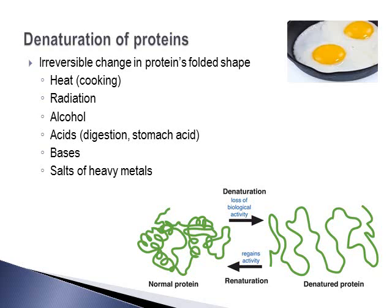This image shows a good example of what a normal protein looks like, and once it's denatured, it usually loses biological activity — the structure of the protein has changed. Generally, this is irreversible. The key concept is knowing what denaturation is: it's really the changing of the shape of the protein.